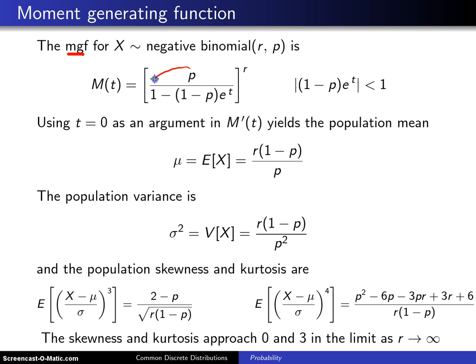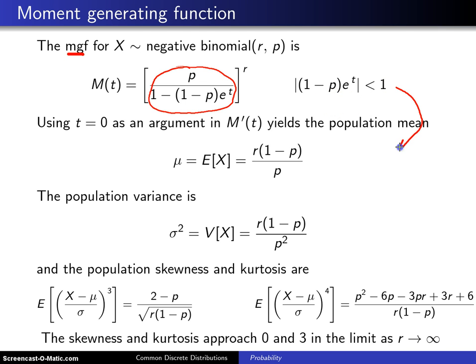You may recognize the quantity inside the braces as the moment generating function of a geometric random variable with parameter p. This has the same domain of definition as before, and if you remember that domain of definition for t, you can go ahead and drop the absolute value marks, because this quantity on the left-hand side is always positive and less than 1.